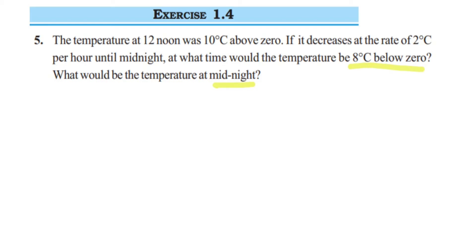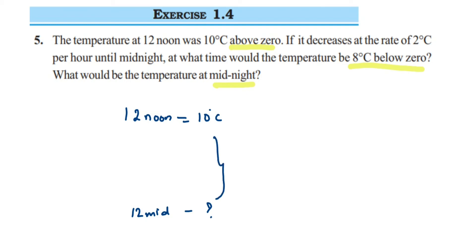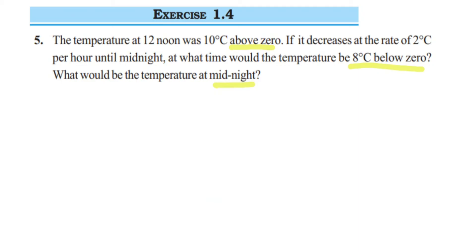Think about the number line — above zero is positive, below zero is negative. So at 12 noon the temperature was 10 degrees Celsius, a positive value. The first question is: at midnight, what will be the temperature? The second question is: at what time will the temperature be minus 8 degrees Celsius? We'll find the temperature at midnight first.